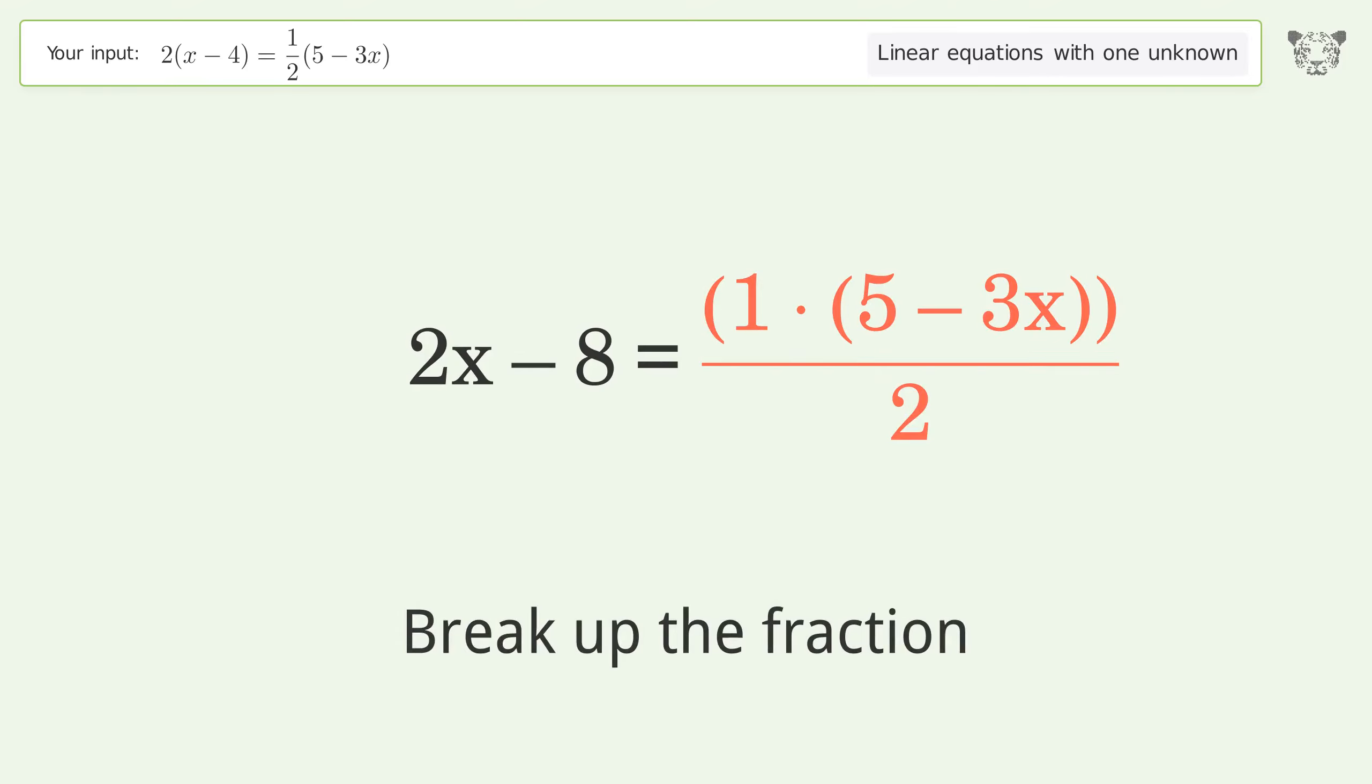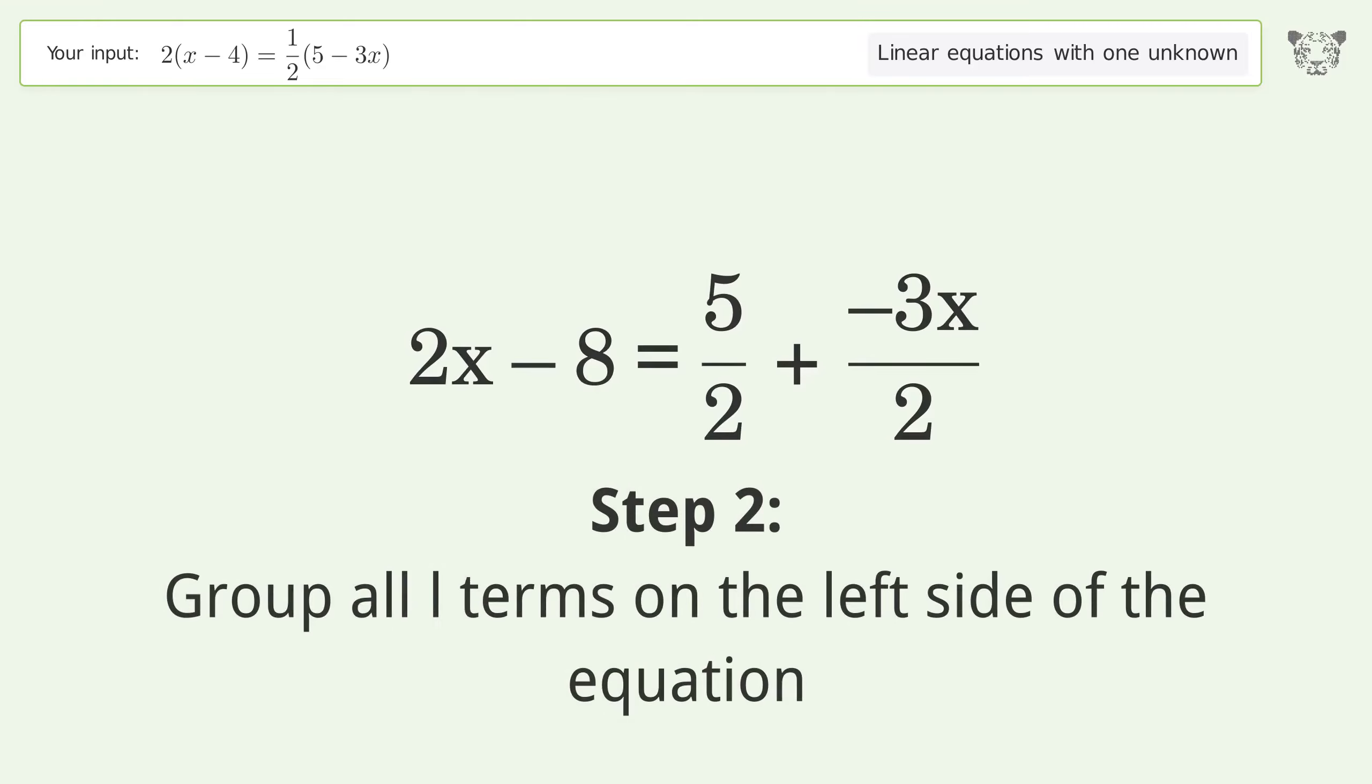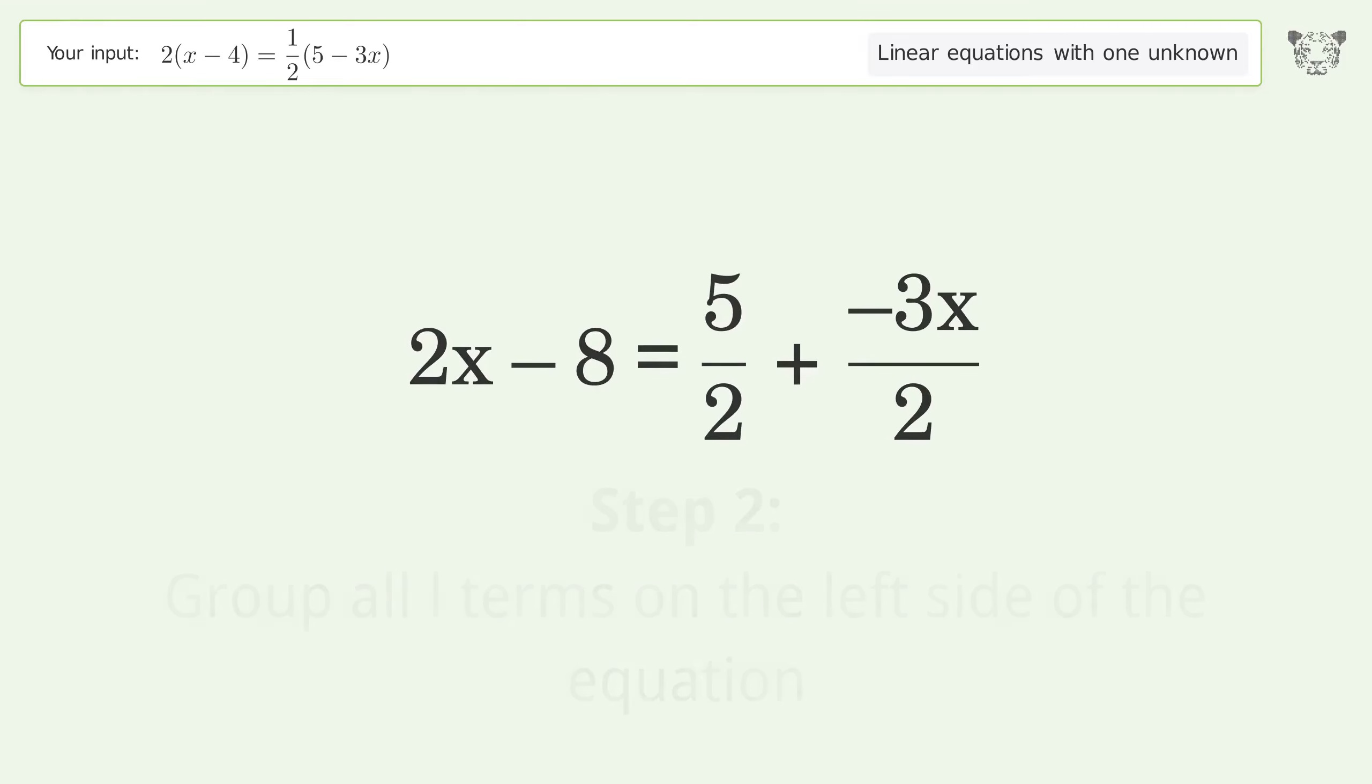Break up the fraction. Group all x terms on the left side of the equation. Add 3 over 2x to both sides.